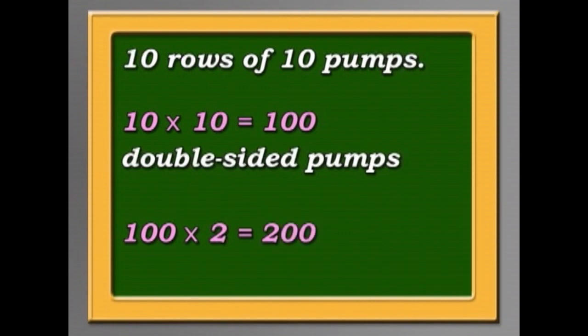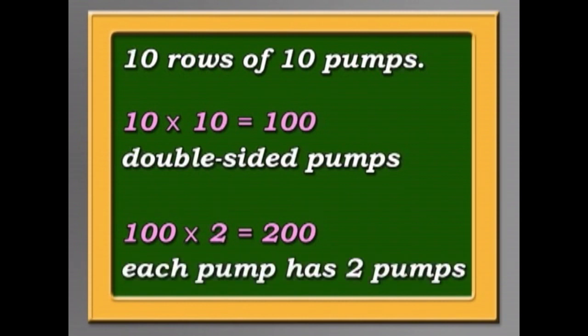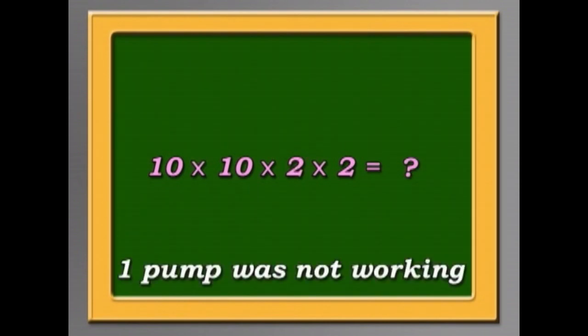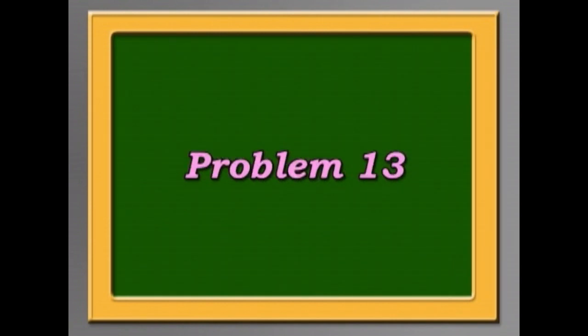But each pump, each side, is a pair of pumps. So each pump has two pumps on either side. So we have to multiply by 2 again. So it's 10 times 10 times 10 times 2 times 2. Oh, and don't forget, one of them wasn't working. Work it out for yourselves. Problem 13.